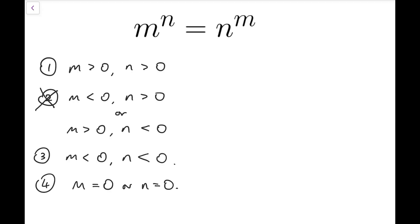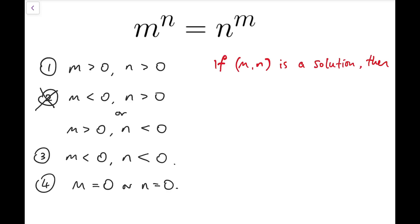Now we come to the third case: if m and n are both negative, then we take a look at the parity. We notice that we cannot have one be even while the other is odd, because then the parity of both sides will be unequal. So they have to be both odd or both even. After looking at this parity, we notice that if m and n is a solution, then minus m and minus n is actually another pair of solutions.